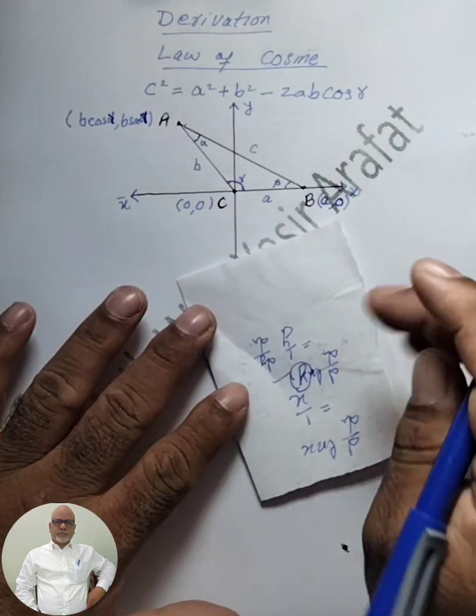Now taking b squared as a common factor from the last two terms, we get b squared times (cos squared gamma plus sin squared gamma). Since cos squared gamma plus sin squared gamma equals 1, this simplifies. So c squared equals a squared minus 2ab cos gamma plus b squared.